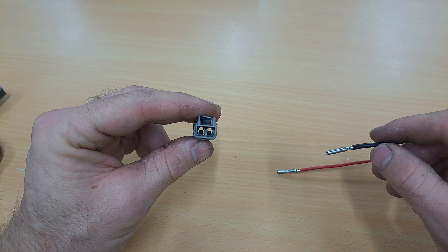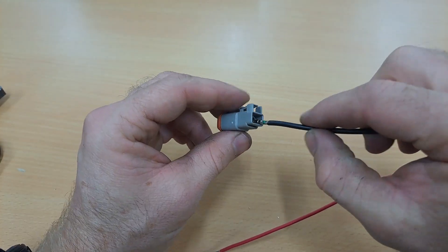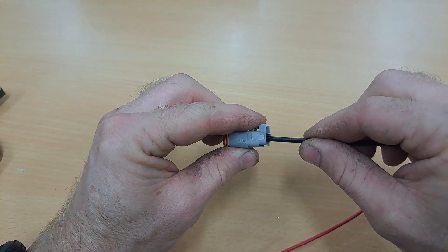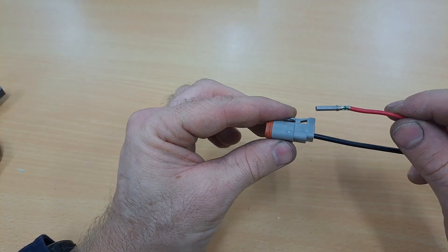Once they are crimped poke them into the terminal holes from this way through. You will feel them click into place. Repeat with the second one.